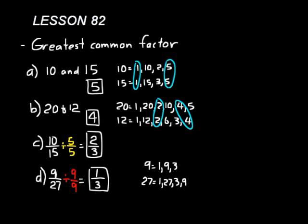Remember how to find the greatest common factor: find all the factors for each number you're comparing, and the largest common factor is your greatest common factor. You can use that when dealing with fractions — always divide by the greatest common factor and that will give you the most reduced form of that fraction. That's all for lesson 82. Thank you.